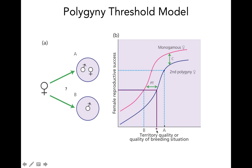The polygyny threshold is this point here — the territory quality for which the fitness payoff of being the second female would be equivalent to being monogamous with the bachelor male. At this particular point there wouldn't be a difference depending on what she chose — either choice would have been fine, she's getting the same fitness payoff. However, as you go above this threshold, if the already mated male has a much higher quality territory that exceeds this threshold, then the female should always choose to mate with the already mated male rather than the bachelor male. That's why we call it the polygyny threshold — she's choosing polygyny over monogamy.